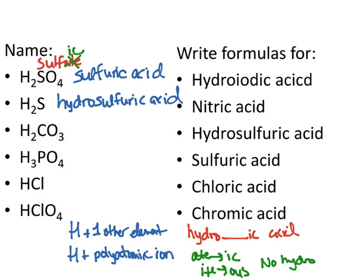Hydro, root, sulfur, and then ic acid. The next one, H and a polyatomic ion. No hydro in front. I check, what is that polyatomic ion? I know it from my list, it's carbonate. What did we say ate turns into? Ate turns into ic. So this is carbonic acid. Notice, there is no hydro in front because it is H and a polyatomic ion.